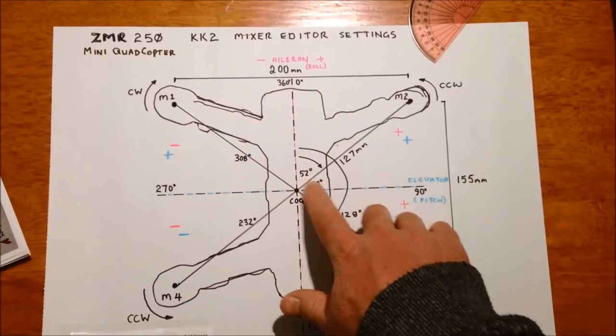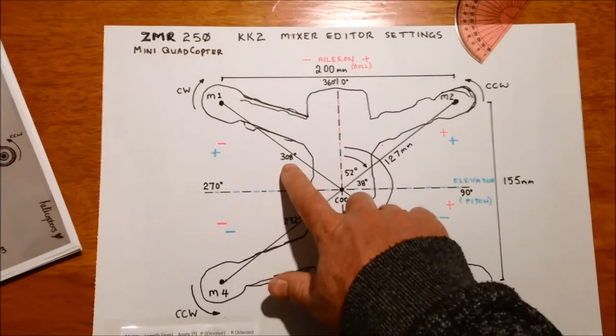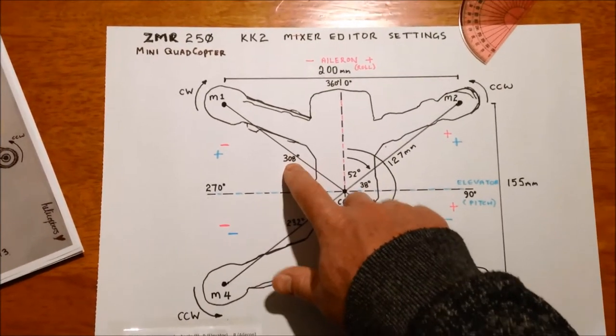So the first motor is 52 degrees, next motor rounds 128, 232, 308, 308 being motor 1.